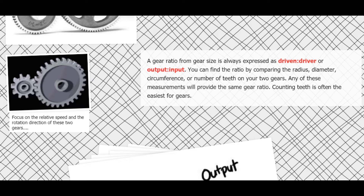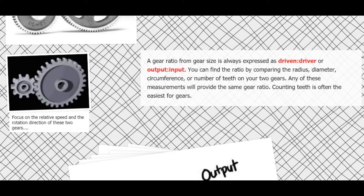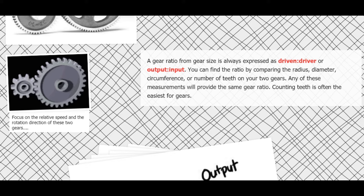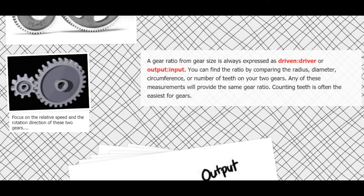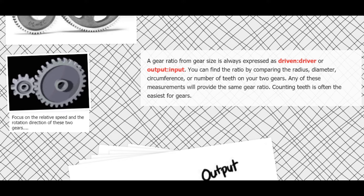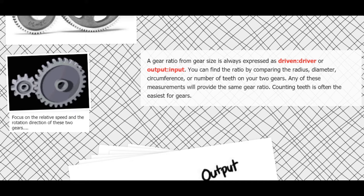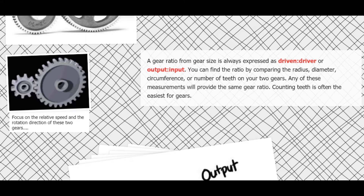When we express a gear ratio, we always express it as driven to driver, reduced to number-to-one or decimal-to-one. That's the same as saying output to input. The input gear — the one that provides the power — is the second number in the ratio, or the bottom number if you express the ratio as a fraction.